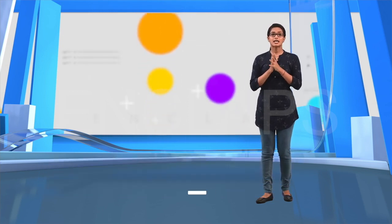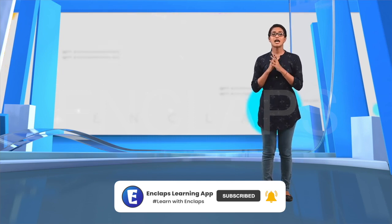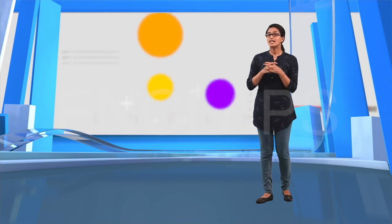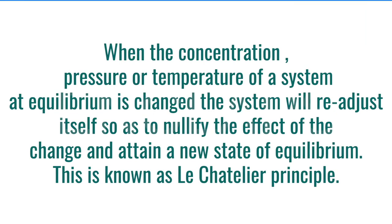The scientist Le Chatelier proposed an important principle related to chemical equilibrium known as the Le Chatelier principle. When the concentration, pressure, or temperature of a system at equilibrium is changed, the system will readjust itself so as to nullify the effect of the change and attain a new state of equilibrium. The system will readjust through forward and backward reactions.